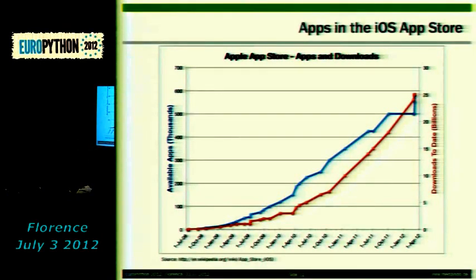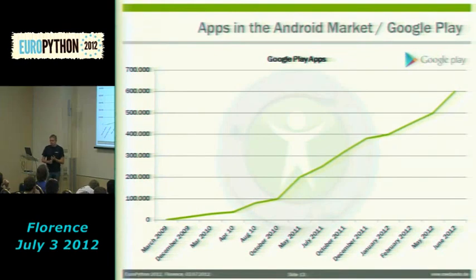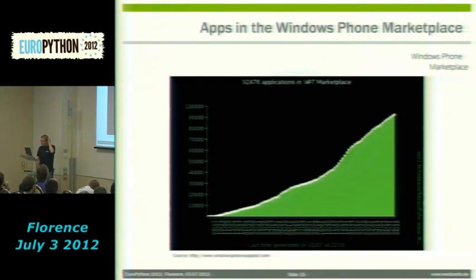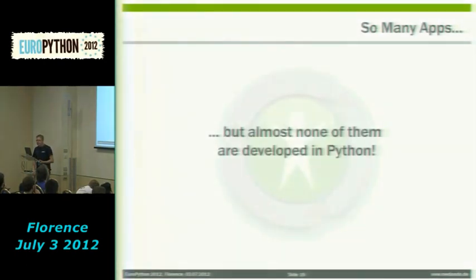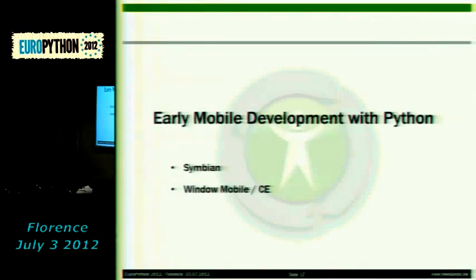The number of apps in these stores is remarkable. In the Apple App Store there were about five hundred thousand apps in April. In Google Play last month in June there were more than six hundred thousand apps. In the Windows Phone Marketplace for Windows Phone 7 there are almost one hundred thousand apps. But as I figured out, almost none of them are actually implemented in Python, which I think is a bit of a shame.